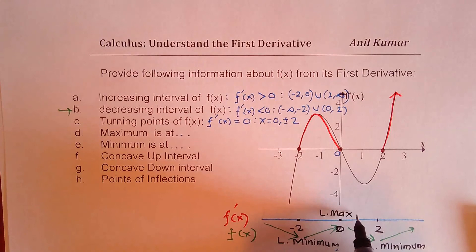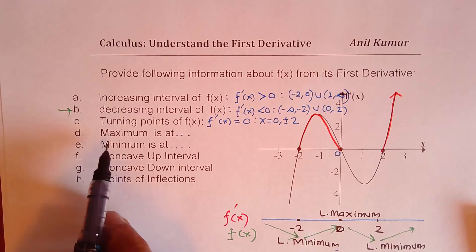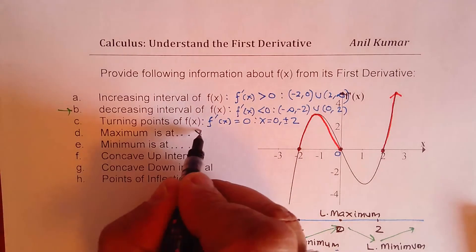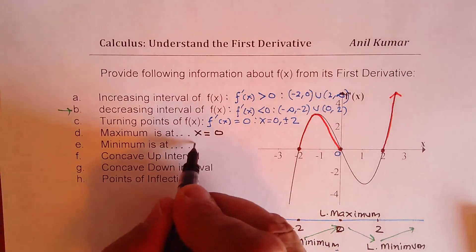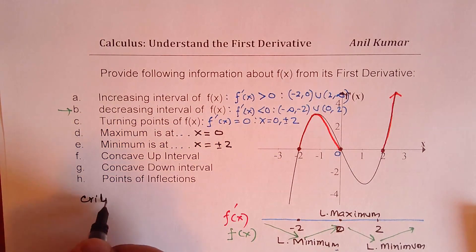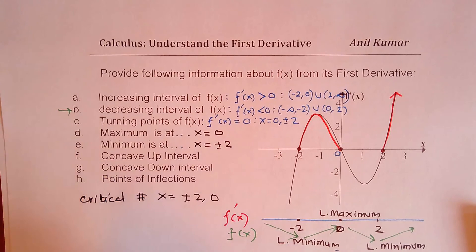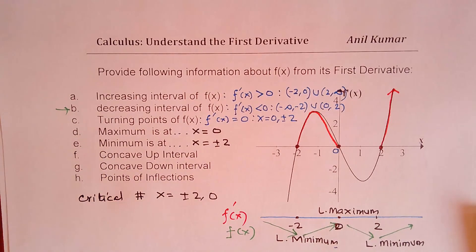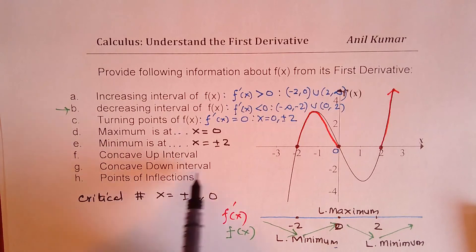So from the first derivative graph, you can easily figure out these points. We can write maximum is at x equals 0 on the function f of x, and minimum we have at x equals minus 2. These are the critical numbers. We have critical numbers at x equals plus or minus 2 and 0 — those are the points where we could have maximum or minimum. Now let's look at the concave up interval, concave down interval, and point of inflection.